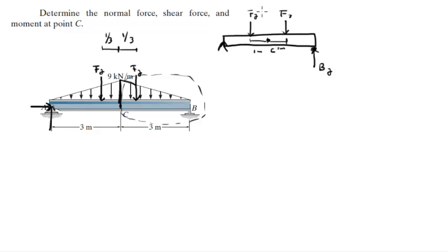F_Y is equal to the length of one triangle, which is 3 meters, times 9 kilonewtons per meter, divided by 2 because it's the area of the triangle. The area of a triangle is length times height divided by 2, so that is equal to 13.5 kilonewtons.